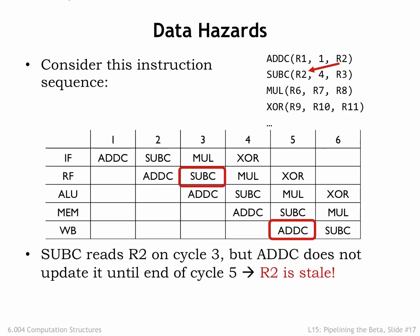Oops! ADDC doesn't write R2 until the end of cycle 5, but SUBC is trying to read the R2 value in cycle 3. The value in R2 in the register file in cycle 3 doesn't yet reflect the execution of the ADDC instruction. So as things stand, the pipeline would not correctly execute this instruction sequence — this instruction sequence has triggered a data hazard. We want the pipeline CPU to generate the same program results as the unpipelined CPU, so we'll need to figure out a fix.